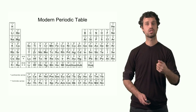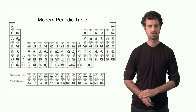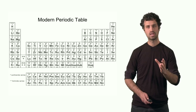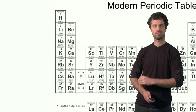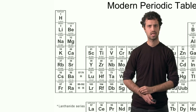Elements with similar electron configurations have similar chemical properties. For instance, all elements in the leftmost column of the periodic table have their last electron in an s orbital — one electron in an s orbital — and thus share similar chemical properties. There are many more such hidden trends in the periodic table that become clear as you learn more about chemistry.